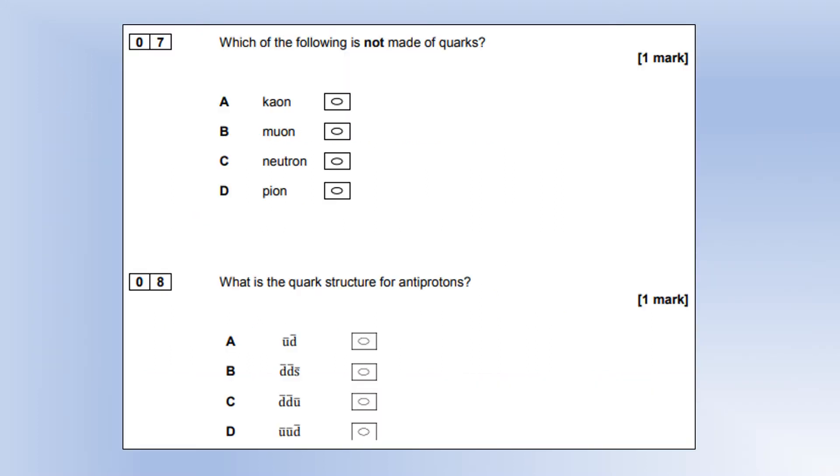Which one of the following is not made of quarks? A kaon is made of a quark and antiquark. A muon is a type of lepton because it's a big electron, so that is not made of quarks. A neutron is made of three quarks. A pion is a quark and an antiquark. So it's clearly option B.